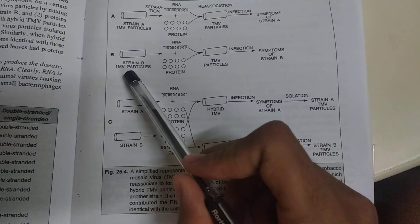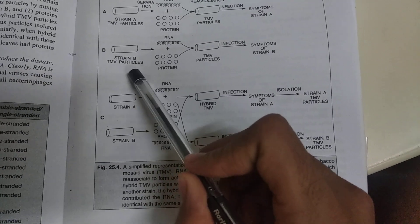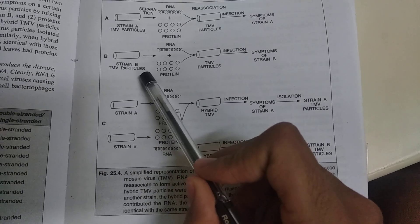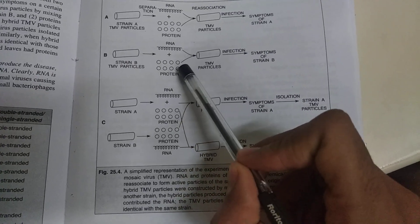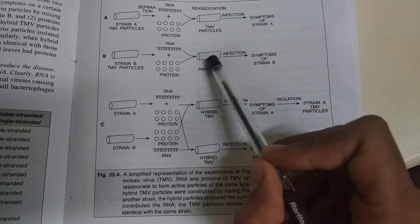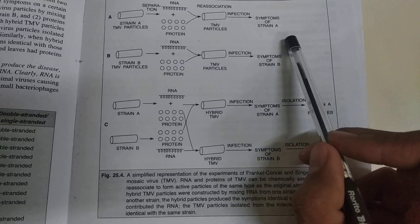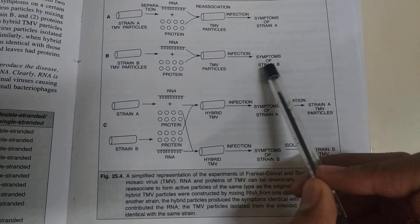In the same way, strain B of TMV particles were taken, separation of RNA and protein took place, they combined and infected the host plants, and they developed the symptoms of strain B.